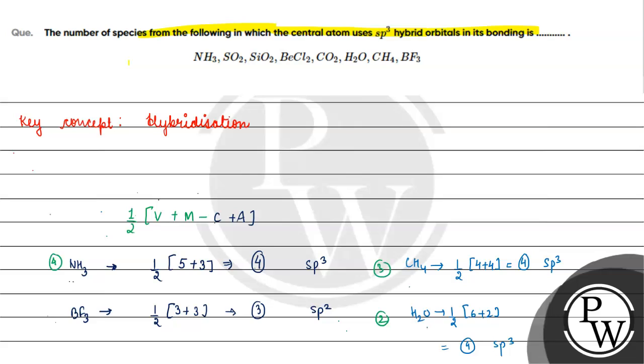So the species with sp3 hybridization are: NH3, CH4, H2O, and SiO2 — that is 4 species. The correct answer for this question is 4. I hope you understood it well. Thank you and all the best.